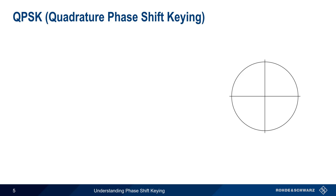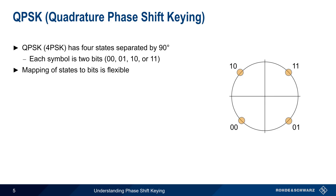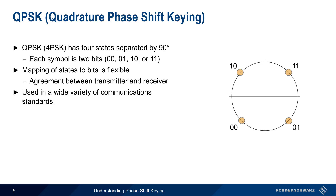Like most other forms of digital modulation, we can increase throughput in PSK by increasing the number of states. For example, QPSK, also called 4PSK, has four states, each separated by 90 degrees. Four states means that each symbol is two bits, so our bit rate is twice the symbol rate. Note that the mapping of phase states to bits is flexible — the only requirement is that the transmitter and receiver both agree as to which bits are represented by which states. Like BPSK, QPSK is used in a wide variety of digital data communication standards, such as various cellular standards, different Wi-Fi or 802.11 variants, cable television, satellite, etc.